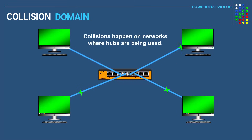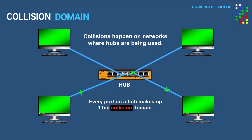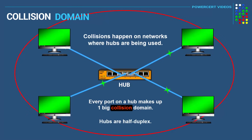Collisions happen on networks where hubs are being used, and this is for a couple of different reasons. The first reason is because every port on a hub makes up one big collision domain, so these four computers connected to this hub are in the same collision domain. The second reason is because hubs are half duplex, meaning they can only communicate in one direction at a time.